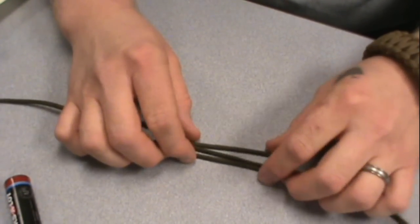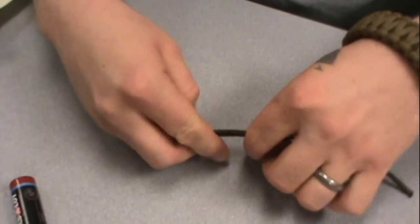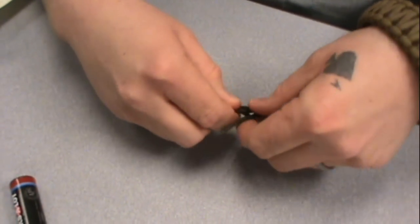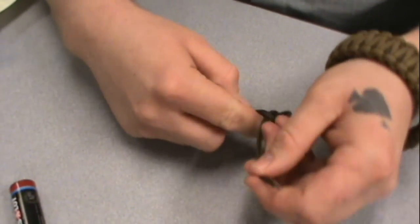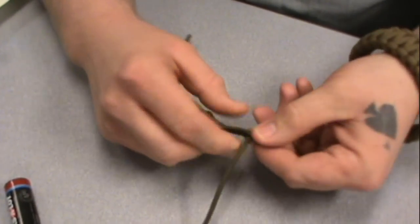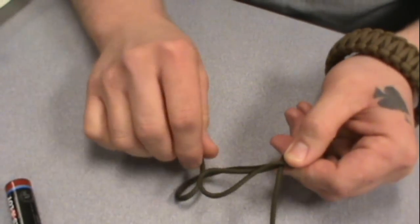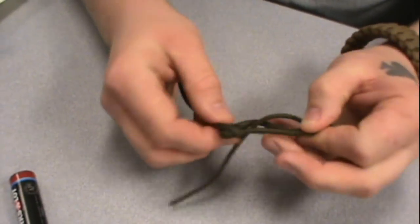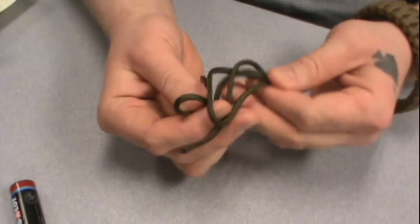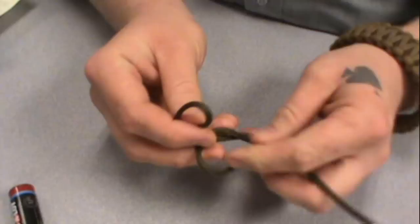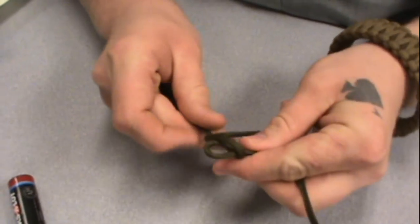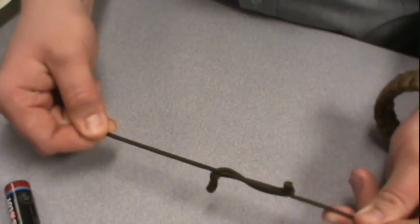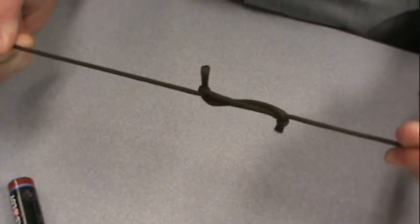You bend it so it's three parts. Make a loop upwards. Put your center loop in. Pull that tight. Come to the other side. Make a loop to where your tag end is pointing down. Paracord is not really the best cordage to use for this. And then you just pull that tight. There you have it. There's a sheep shank.